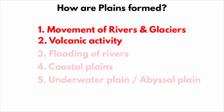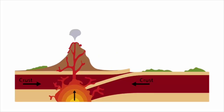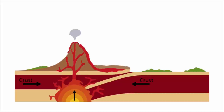Even volcanic activity can also form plains. When lava flows out of a volcano, it spreads across the land. The soil is mostly a dark-colored mineral called basalt. This soil gets broken down into tiny particles over millions of years with the help of rain, wind, ice, etc. And that is how, due to volcanic activity, plains are formed.